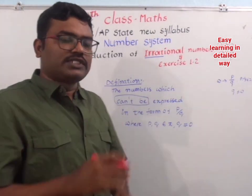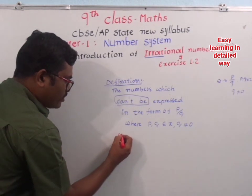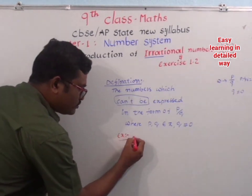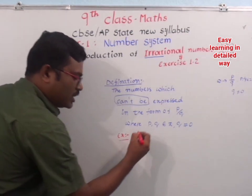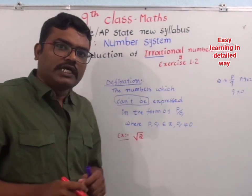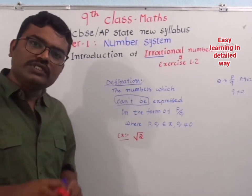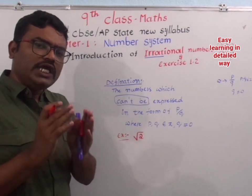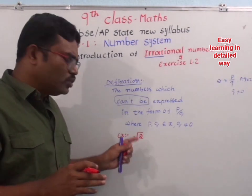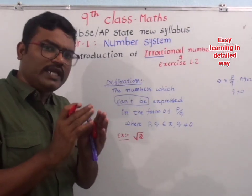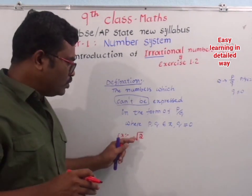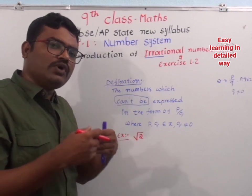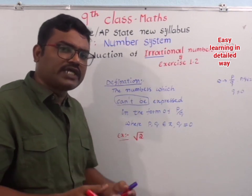Some examples of Irrational Numbers — for example, root 2. Root 2 is an irrational number. Now let us discuss why root 2 is irrational. There is no equal integer for this. Root 2 does not exactly equal any integer, and it is not equal to any fraction also.